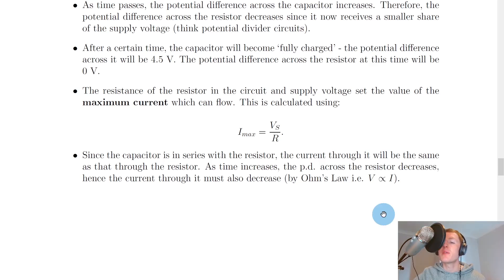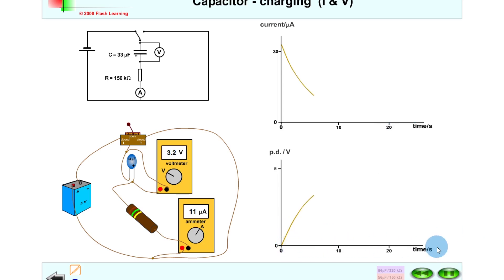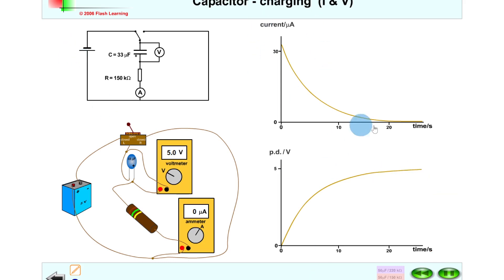To help visualize the graphs, here's a quick simulation with a circuit setup similar to the notes. Using a 33 microfarad capacitor with a 150 kilohm resistor, clicking play to start charging shows that potential difference against time increases over time, while current against time decreases over time. The potential difference reaches a maximum equal to the supply voltage, and the current decreases to zero when electrons can no longer flow in the circuit.